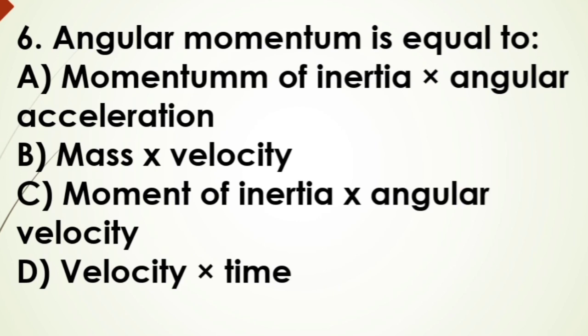Now the sixth question: angular momentum is equal to - A) moment of inertia multiplied by angular acceleration, B) mass multiplied by velocity, C) moment of inertia multiplied by angular velocity, and D) velocity multiplied by time. And the answer is moment of inertia multiplied by angular velocity, option C.